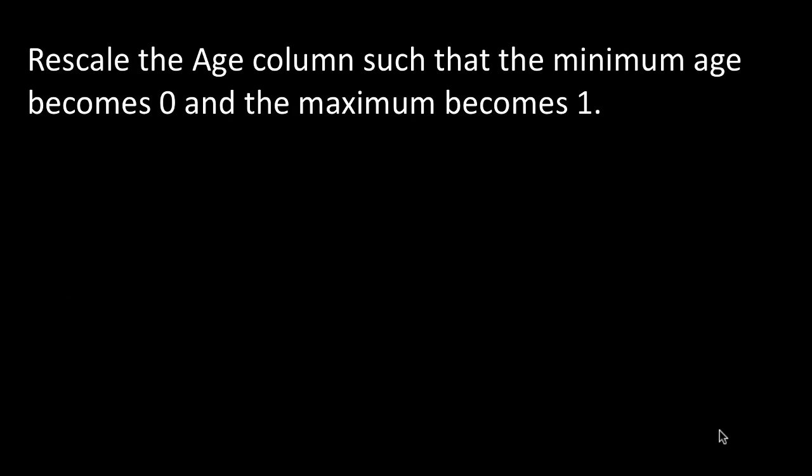Let's do one more problem. Let's rescale the age column in the Toyota Corolla data frame such that the minimum value becomes 0 and the maximum value becomes 1. This kind of rescaling operation is quite common in data science because many times when you're working with columns of different magnitudes, you may want to bring them to the same denominator by converting them into the same range, making them comparable or commensurate. We won't encounter this in this course but will in the following course.